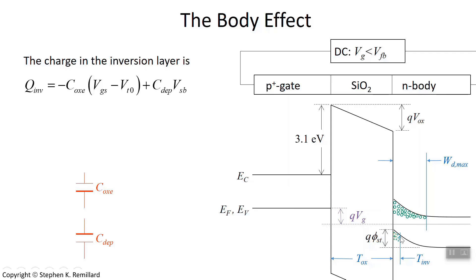Now, the existence of the space charge in the inversion layer was rationalized in a previous video by envisioning the capacitances involved. You have an oxide capacitance, which is the effective capacitor you would replace the oxide with in a circuit model, and you have the depletion capacitance, which is the capacitor you would replace the depletion layer with. The charge in the inversion layer is the sum of the charge on the bottom plate of the oxide capacitor and the top plate of the depletion capacitor.